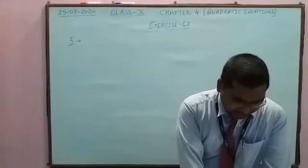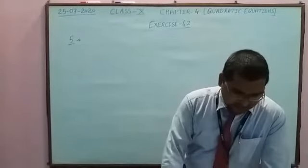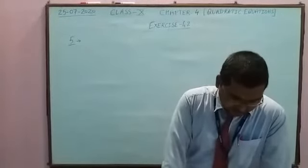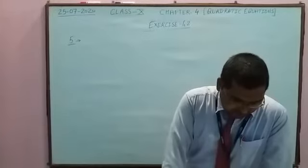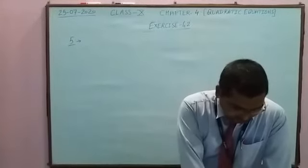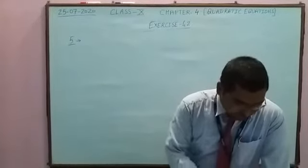The altitude of a right triangle is 7 cm less than its base. If the hypotenuse is 13 cm, find the other two sides.